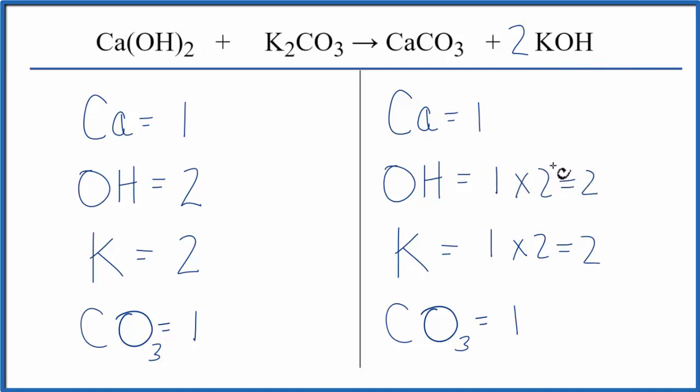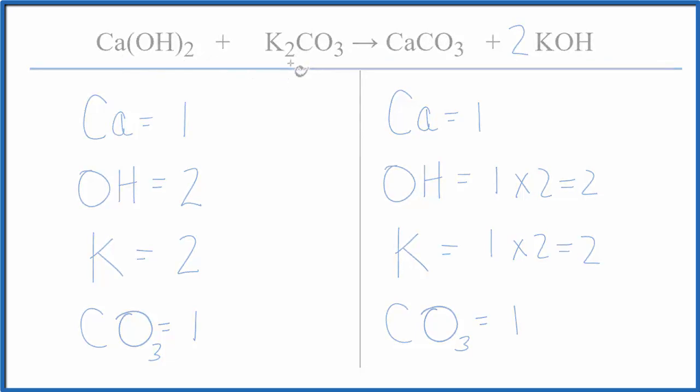And we're done. This equation is balanced. So you can see the value of looking at something like the hydroxide group as one item if it appears on both sides of the equation, likewise the carbonate. This is Dr. B with the balanced equation for Ca(OH)2 plus K2CO3. Thanks for watching.